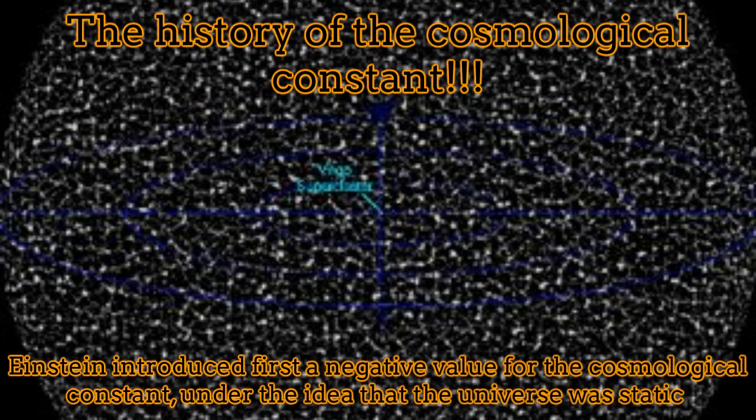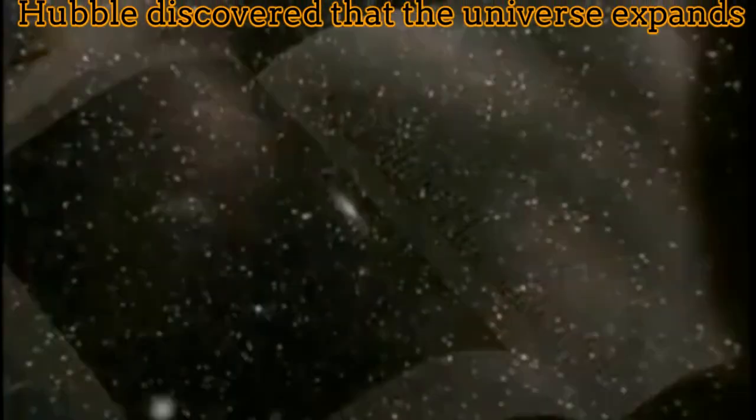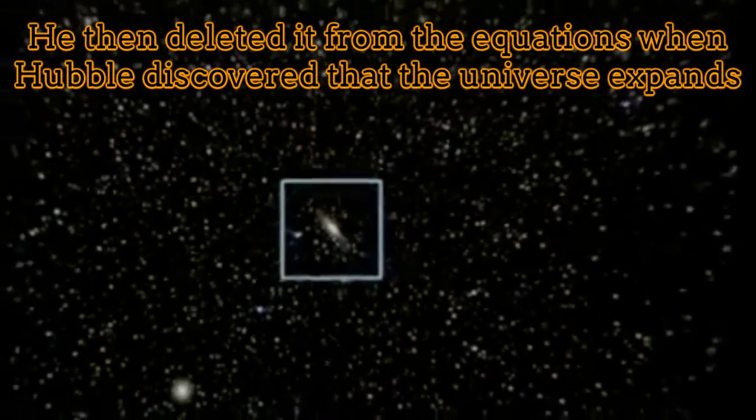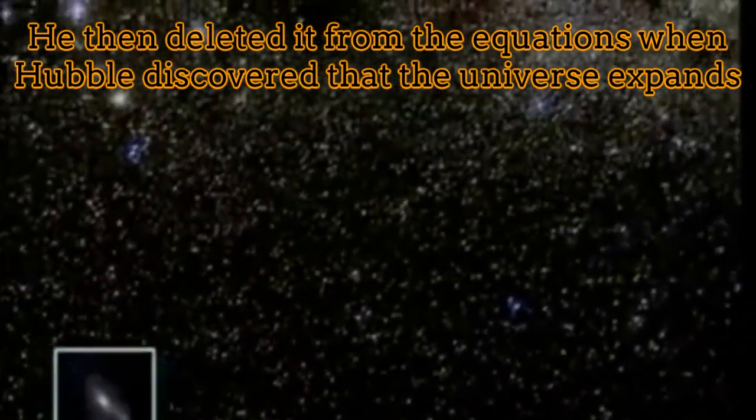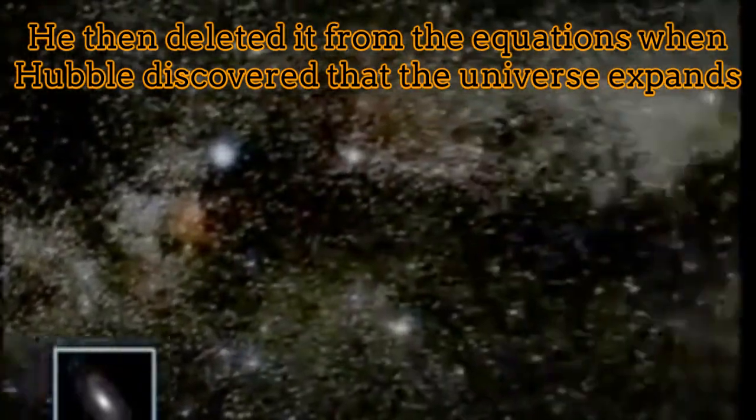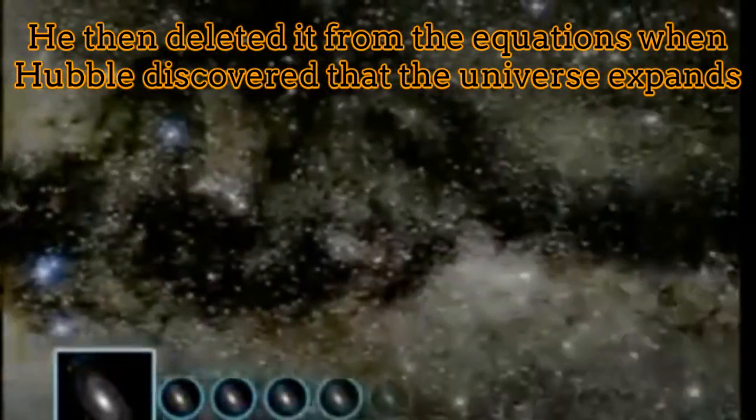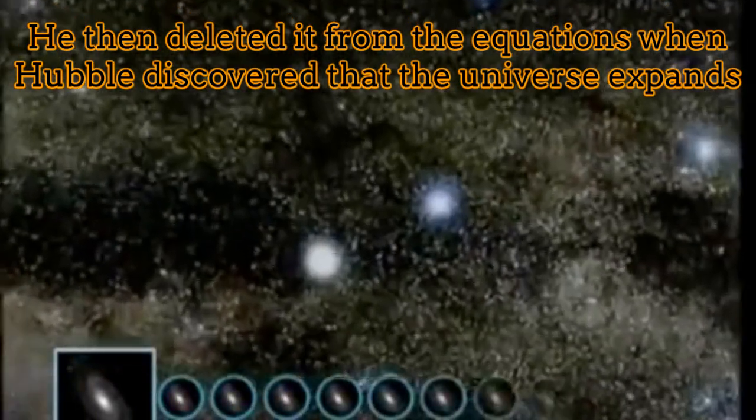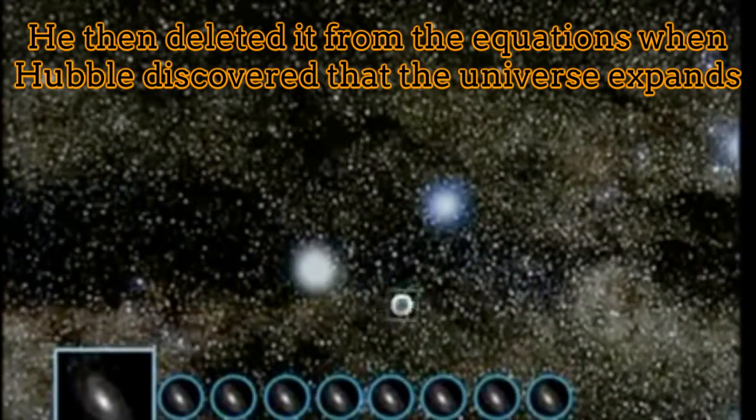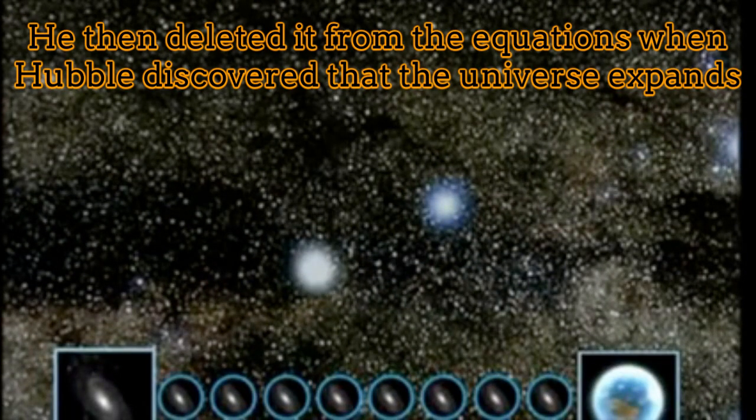Let's revise a little bit the history of the cosmological constant. Einstein initially introduced a negative cosmological constant for keeping the universe static. Einstein, of course, believed that the universe was static, and that's why he introduced the negative cosmological constant. However, Edwin Hubble discovered that the universe expands. Then Einstein deleted the cosmological constant from the equations.